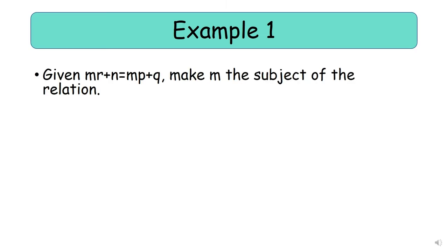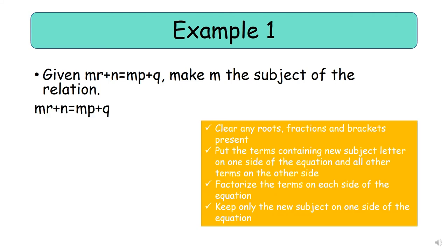Let's look at some examples. Given mr + n = mp + q, make m the subject of the relation. Clearly there's no root sign, fraction, or brackets, so we start from the second step. We put the terms containing the new subject letter on one side of the equation and all other terms on the other side. Here we want to make m the subject. The terms containing m are mr and mp, so we move mr and mp to one side of the equation.